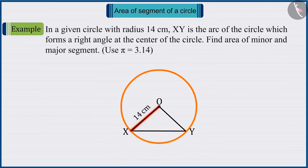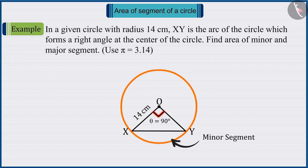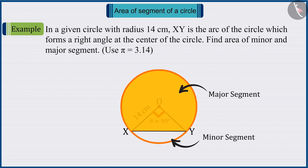In a given circle of radius 14 cm, XY is an arc of the circle which forms a right angle at the center of the circle. Can you find the area of minor and major segment? Here, use the value of pi equals 3.14.